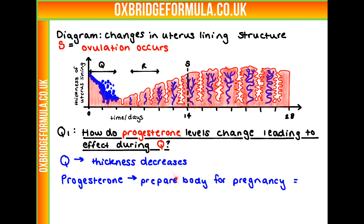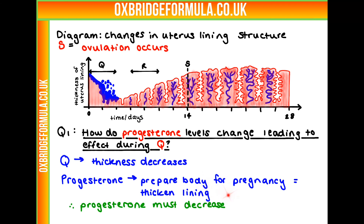Progesterone is a hormone that, when released, prepares the body for pregnancy. When we're pregnant, we want a thick uterus lining to support that environment, so progesterone is going to thicken the lining. So if we have a decrease in thickness, we're probably going to have a decrease in progesterone. That's the answer to our first question.